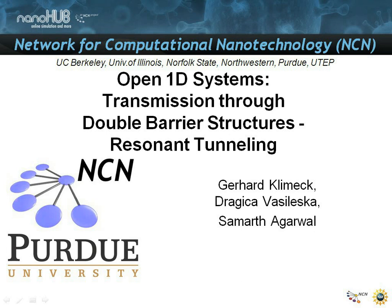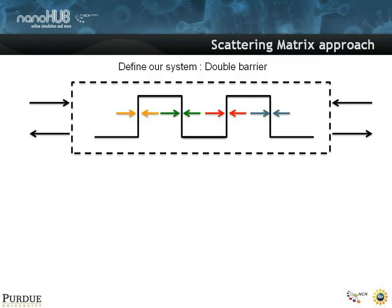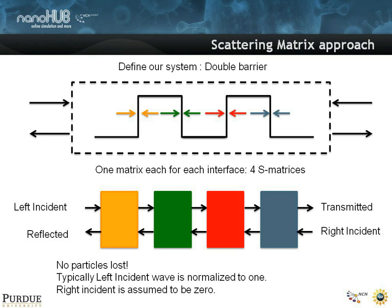In this segment I would like to talk about transmission through two barriers in the open 1D systems section. This looks at a systems approach — right now you have four segments where you would have to do wave function matching. If you do a transfer matrix approach, this is how you would write it down. On the left you have incident and reflected, and you are trying to find out what the transmitted is. You assume that there is nothing coming from the right and there are no particles lost. This is analytically solvable for flat potentials.